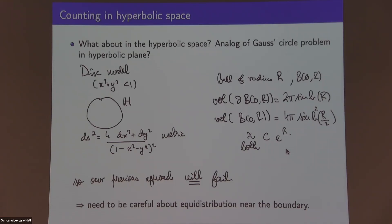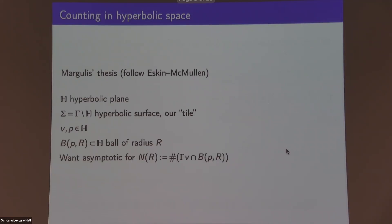In order to get a good result in hyperbolic space, we need to be careful about the distribution near the boundary — we need to remember the signs a little bit, or equivalently, whether the left-hand corner of a tile is within or without the region approximately the same amount of time. I'll describe a situation where this counting was done that comes from Eskin-McMullen's work. I'll explain how you can use equidistribution results to get sufficient cancellations.